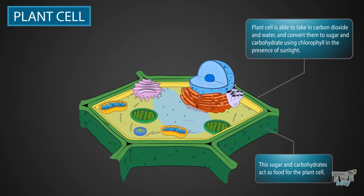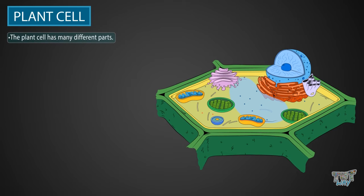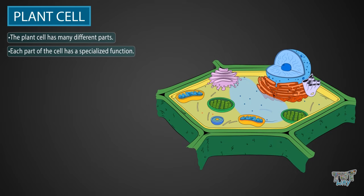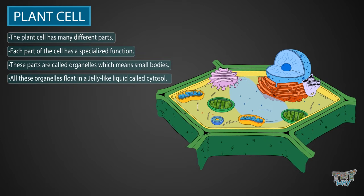Now, let's learn about the unique structure of a plant cell in detail. A plant cell has many different parts, and each part of the cell has a specialized function. These small parts are called organelles, which means small bodies. All these organelles float in a jelly-like liquid called cytosol. This diagram shows the various organelles of a plant cell.